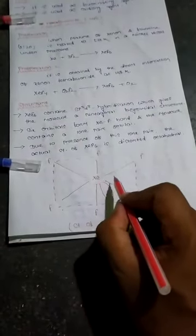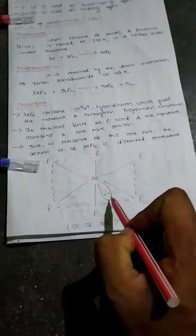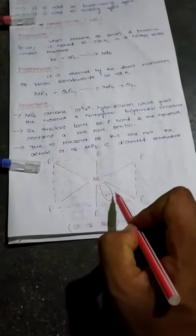Six orbitals from xenon are in fluorine bonds and the molecule contains a lone pair orbital. So there are six fluorine bonding orbitals and one lone pair. Due to the presence of this lone pair...